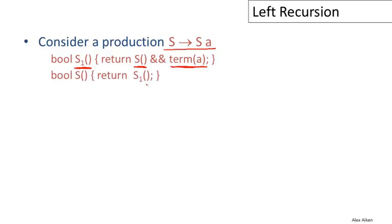And then we have to write a function for the symbol S itself. And since there's only one alternative, there's only one production for S, we don't need to worry about backtracking or anything. So S will succeed exactly when S1 succeeds. There's only one possibility in this case.